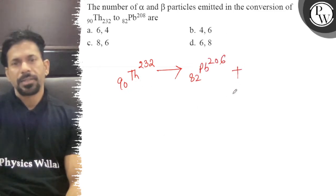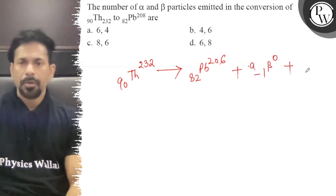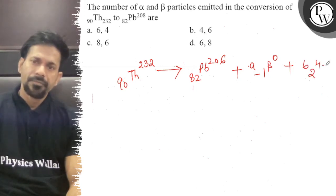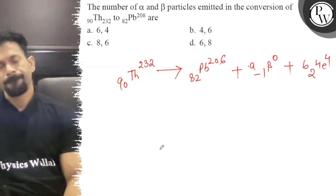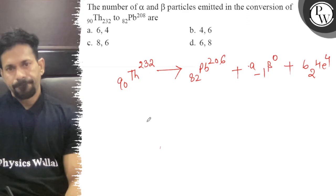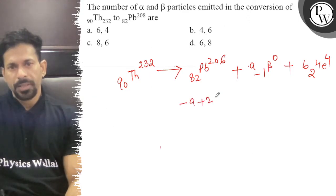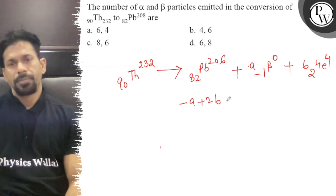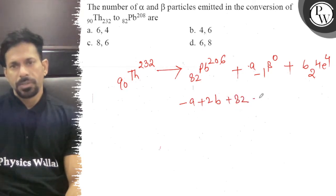So here we have -1β0 plus 2He4. So here we have minus a plus 2b plus 82 is equal to 90.